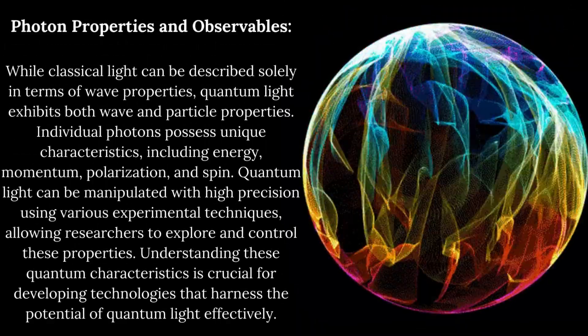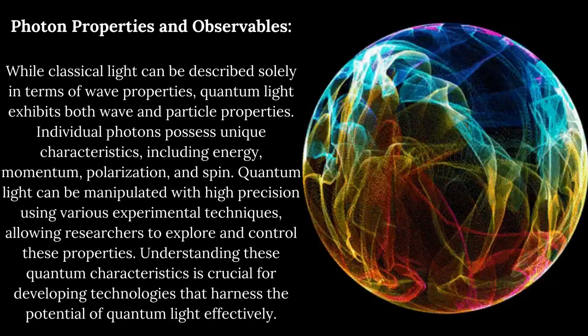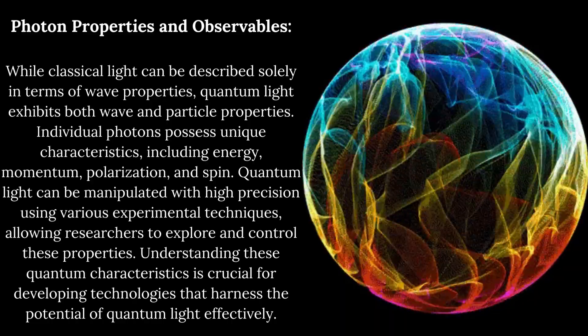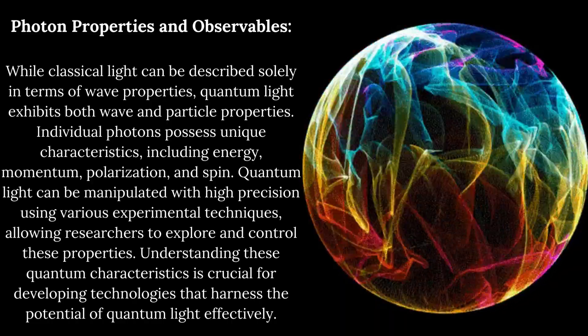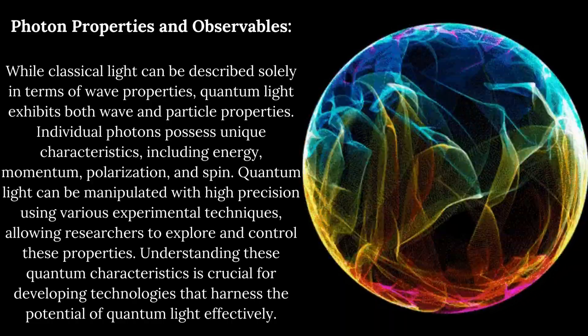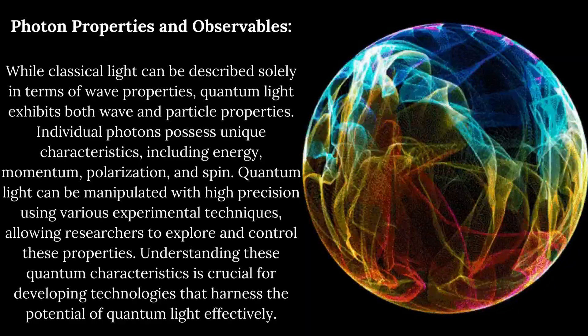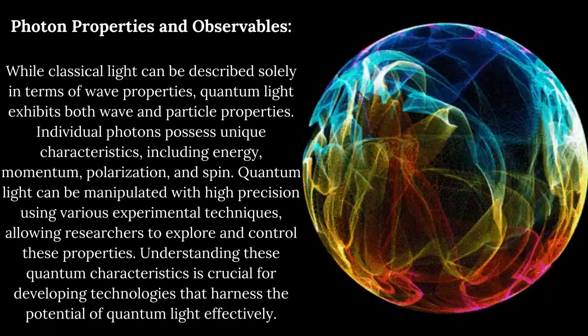Photon properties and observables: While classical light can be described solely in terms of wave properties, quantum light exhibits both wave and particle properties. Individual photons possess unique characteristics, including energy, momentum, polarization, and spin.